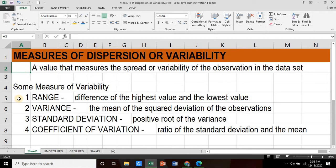Here are some measures of variability. We have the first one, the range. This is simply the difference of the highest value and the lowest value. The second is the variance.